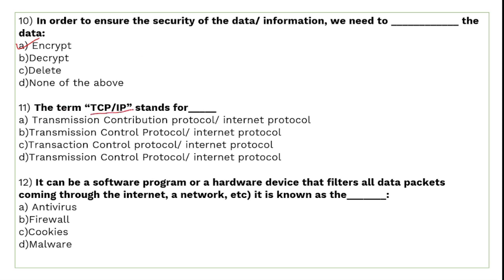The term TCP/IP stands for Transmission Control Protocol / Internet Protocol. This is the protocol the internet uses for transmission of data from one place to another. Internet Protocol provides IP addresses to devices, and Transmission Control Protocol delivers messages from sender to receiver in the form of packets.